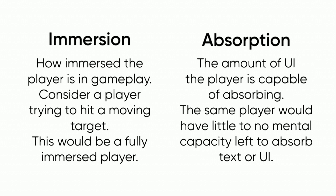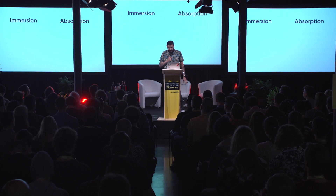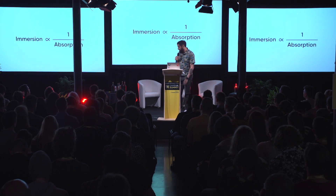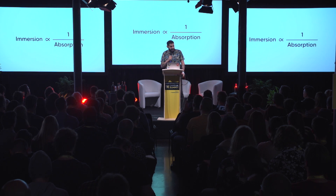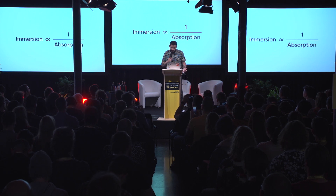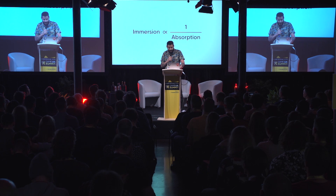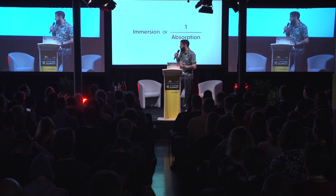Absorption is the amount of UI the player is capable of absorbing. So imagine that same player — he might not be in a state to absorb UI shown to him in the form of icons or text. These variables are inversely proportional. The more immersed you are, the less likely you'll be able to absorb information if you throw it at the player. What it also means is that you can plot this out on one axis.